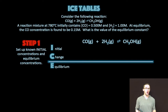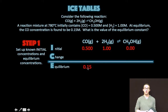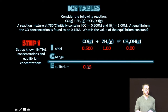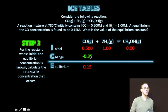Step one: set up known initial concentrations and equilibrium concentrations. We're told the initial concentrations of carbon monoxide and hydrogen. We can assume that, because those are the only concentrations we are given, the concentrations of the other species — in this case, the methanol — is zero. And we're told the equilibrium concentration of CO is 0.15. We've had a decrease from our initial to equilibrium concentration for carbon monoxide, which indicates the reaction is shifting to the right to establish equilibrium.